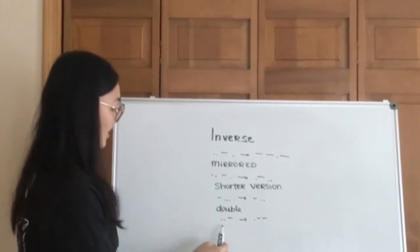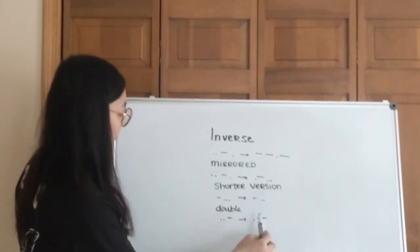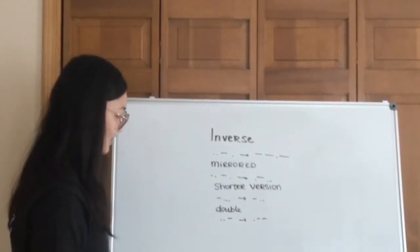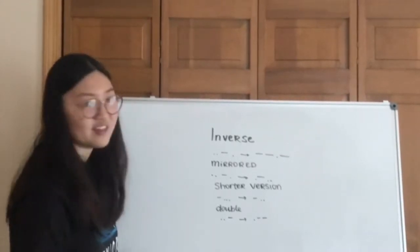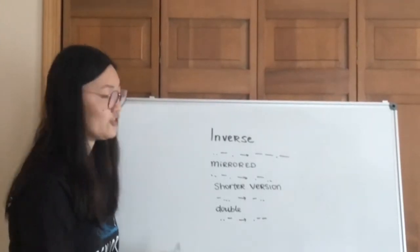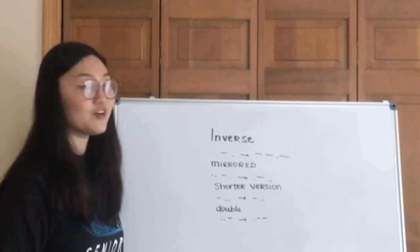And then double, meaning if we count the dot as a zero and the dash as a one, then the double means that there are two ones instead of one, if that makes any sense. Again, as I said, you can always feel free to invent your own terms, but these just make the most sense in my head, and you can definitely feel free to use them.